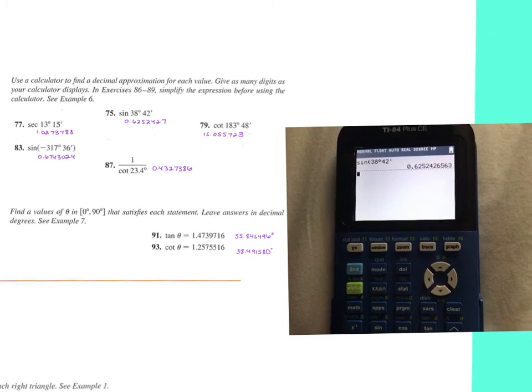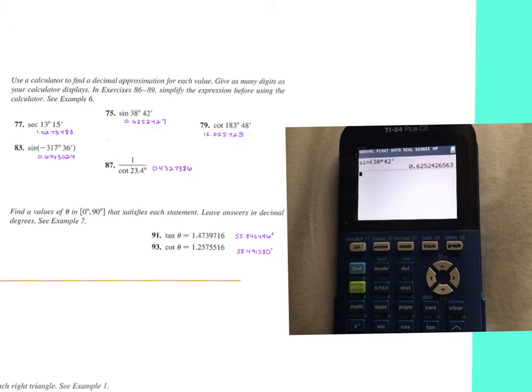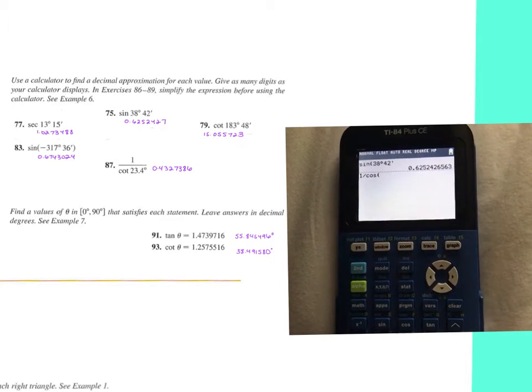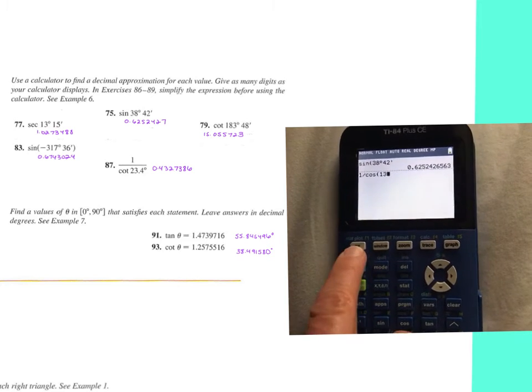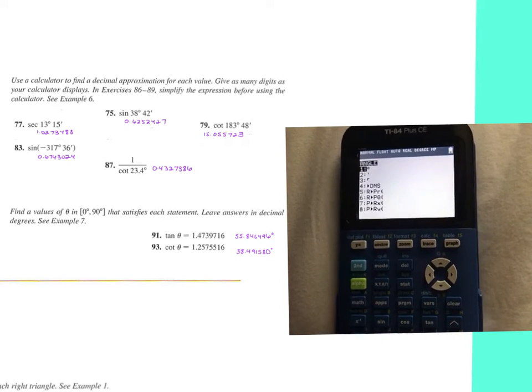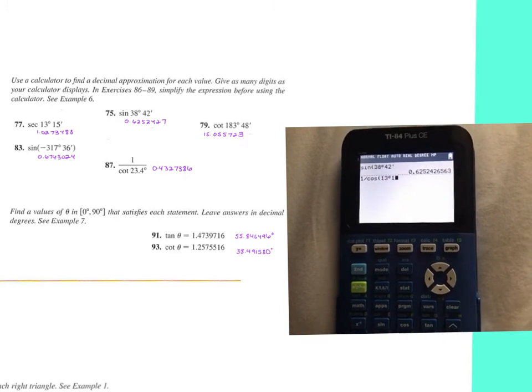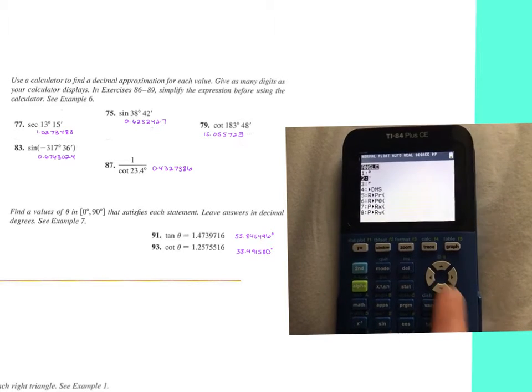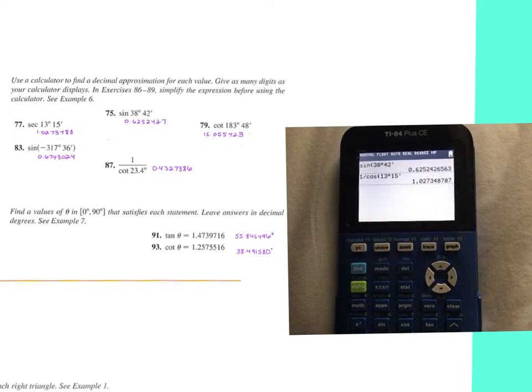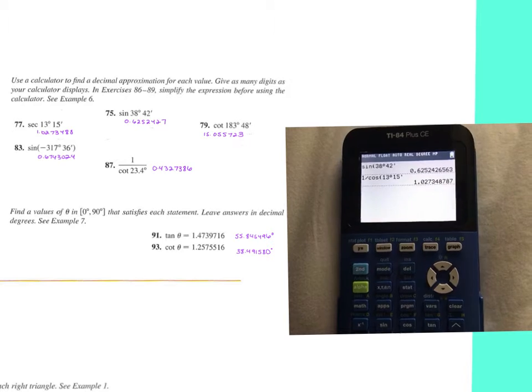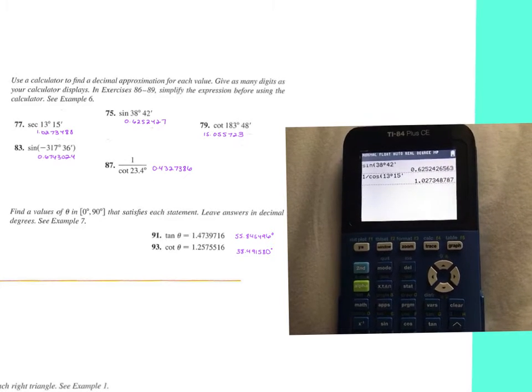You get that .6252427. For number 77, it's secant, so we have to do 1 divided by cosine, 13, go back to that second apps menu, get your degree symbol, 15 second apps, get the single tick mark. Enter.